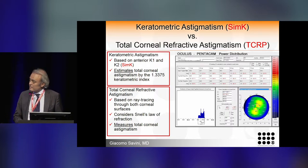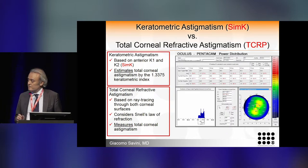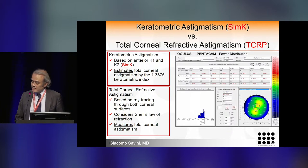Alternatively, we can use the total corneal refractive power and astigmatism, which is based on ray tracing through both corneal surfaces. It considers Snell's law of refraction and provides us with the total corneal astigmatism.